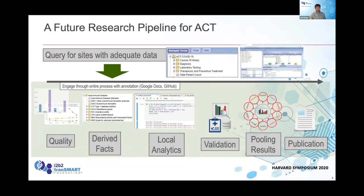So what's the future? No one knows, but here are some ideas. Here's a pipeline inspired by things we've learned from other places. You could start with taking the data after you've got it in the ACT ontology and do quality checks on it. I'm going to talk about a quality project we're currently doing in ACT.